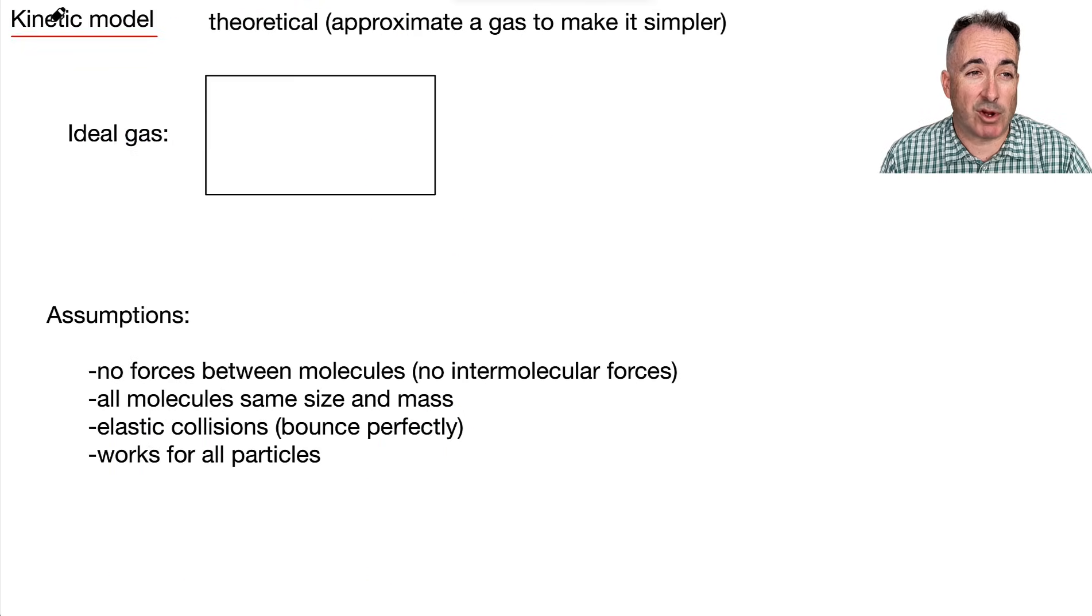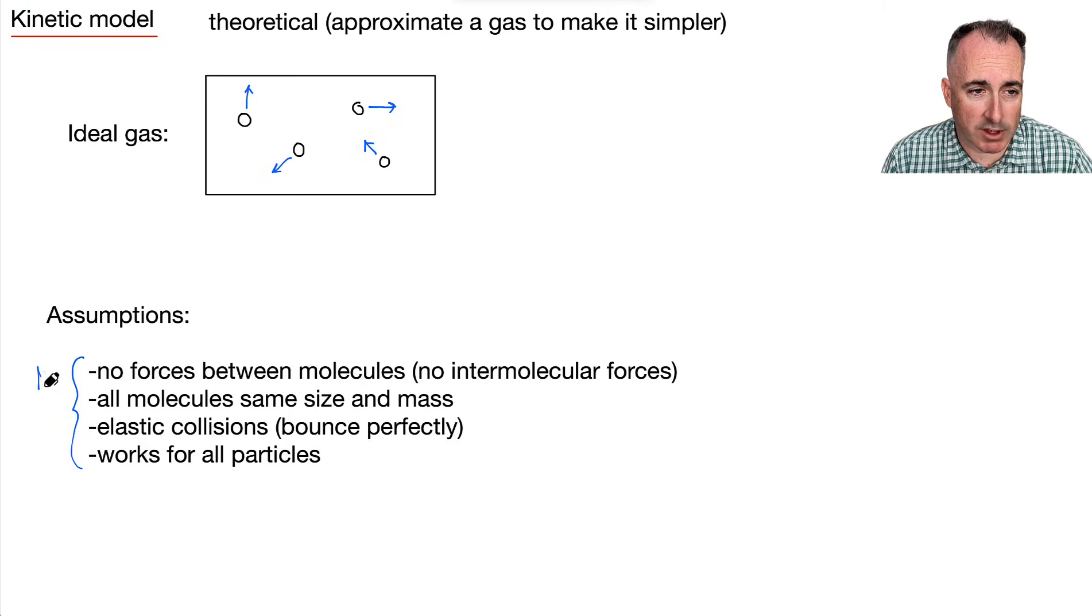So let's consider what we call the kinetic model. This is a theoretical model and we're going to approximate a gas to make it simpler. We're going to call this an ideal gas. Imagine that in this ideal gas there's these different particles that are moving around in random directions, moving along, some of them running into each other. The assumptions of this kinetic model are really, really important. Know this. At least know a few of them.